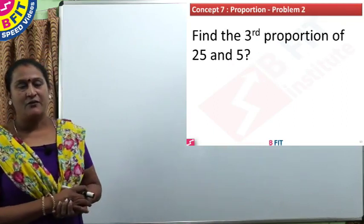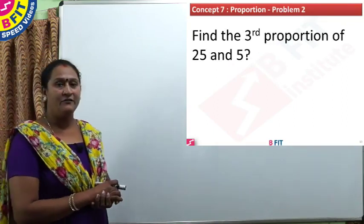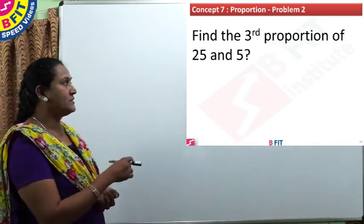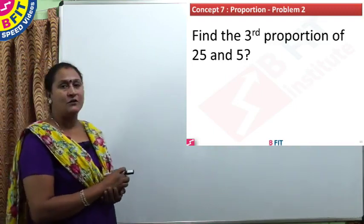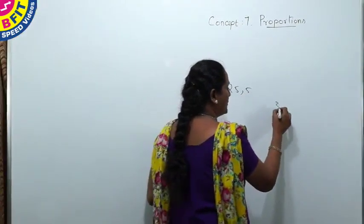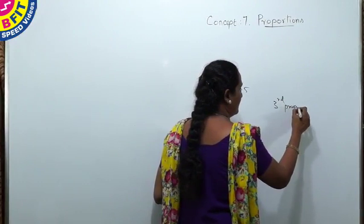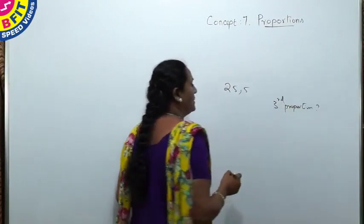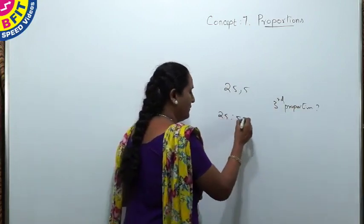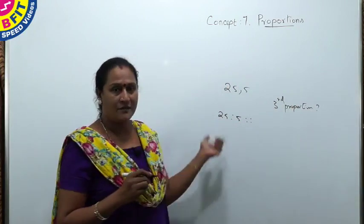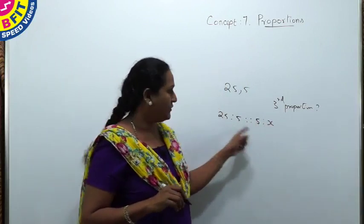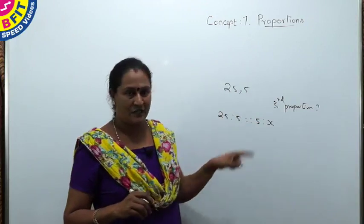Next question: find the third proportion of 25 and 5. Here the third proportion is asked. Without changing the order, we write these numbers to find the third proportion. When two numbers are given and the third proportion is asked, we write: 25 is to 5 as 5 is to x — the second number is repeated again, and x is placed in the fourth position.